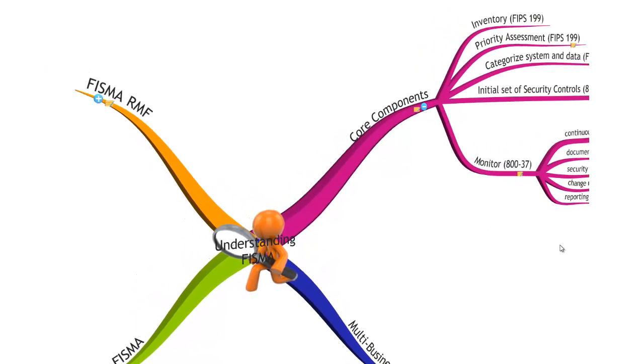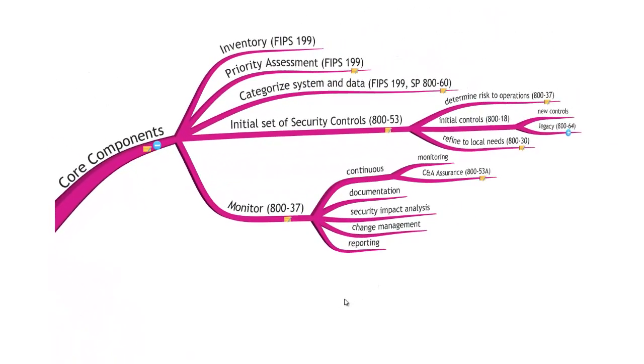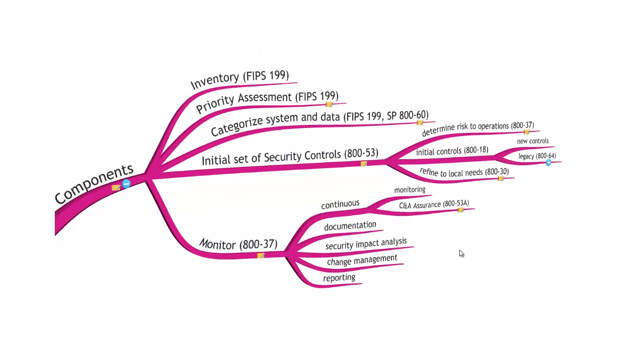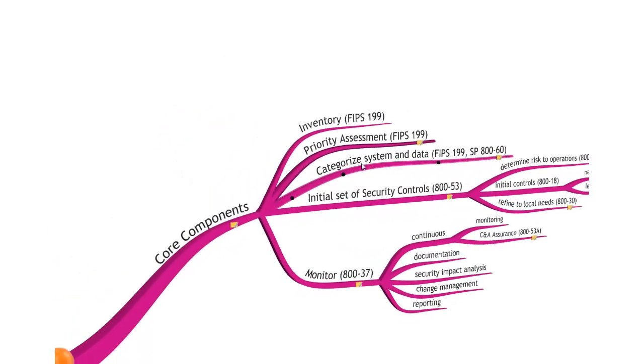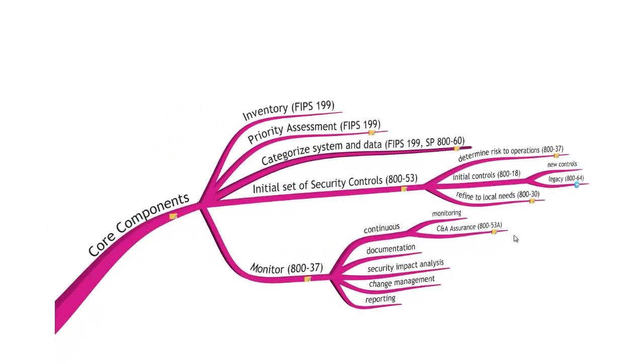Let's start with the core components. The core components illustrated on the screen are grouped into three primary areas. These first three are inventory, priority assessment, and categorize the system and data.